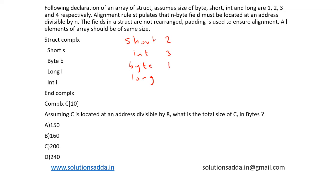byte is of size 1 and long is of size 4. And alignment rules stipulate that n byte field must be located at an address that is divisible by n. Also, the fields in the struct are not rearranged. Padding is ensured to have alignment. And all elements of the array should be of same size.